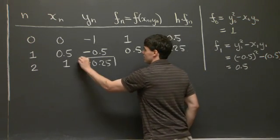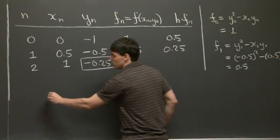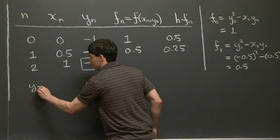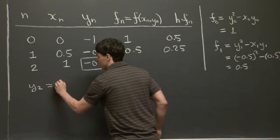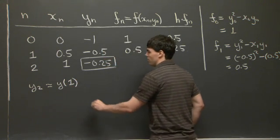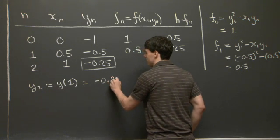And we note that this is the answer we're looking for. So just to conclude, our approximation y_2, which is approximately y evaluated at 1, is going to be -0.25.